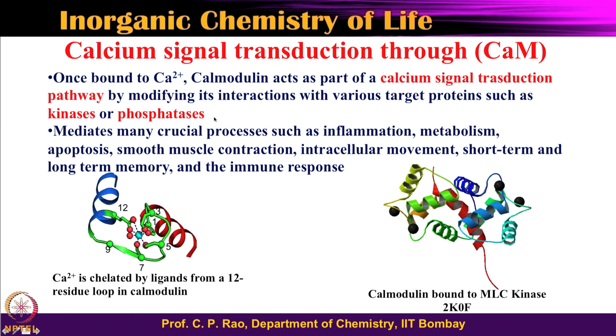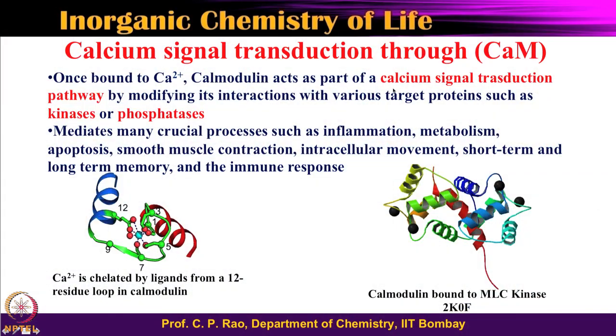Kinase means phosphorylation — a phosphorylating enzyme. Phosphatase means phosphate hydrolysis — a phosphate removal enzyme. When calcium binds to calmodulin and triggers the signal transduction pathway by interacting with kinases and phosphatases, the entire business is adding and removing phosphate groups: phosphorylation and dephosphorylation. When you phosphorylate a protein, its conformation and properties change; similarly with dephosphorylation.